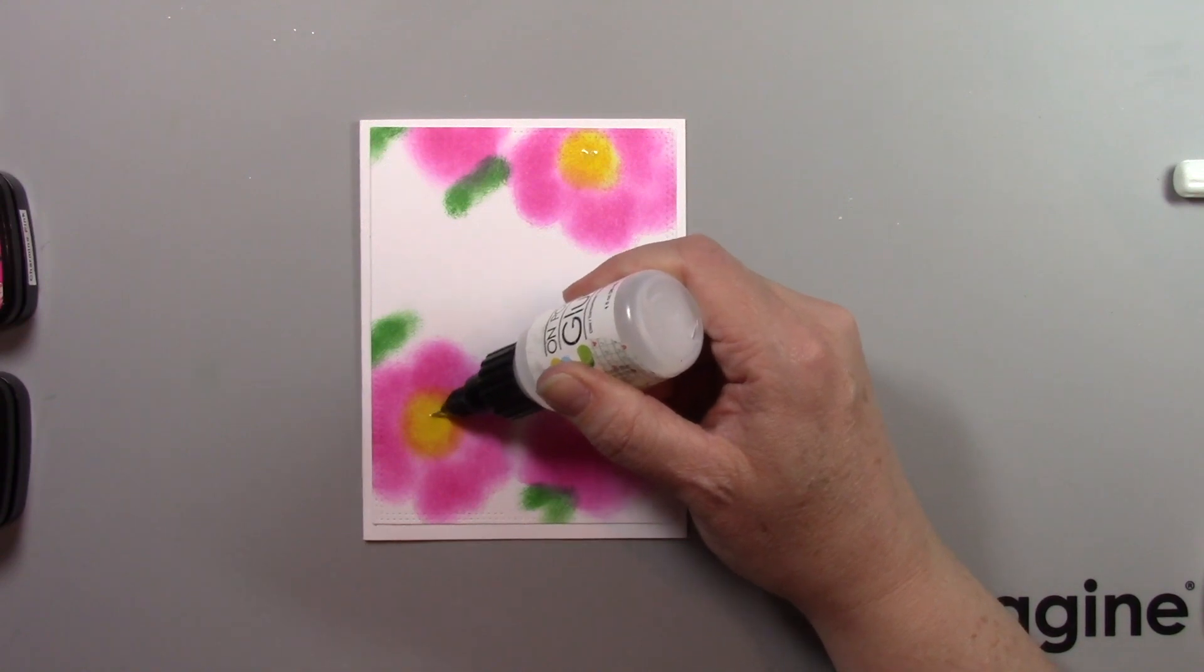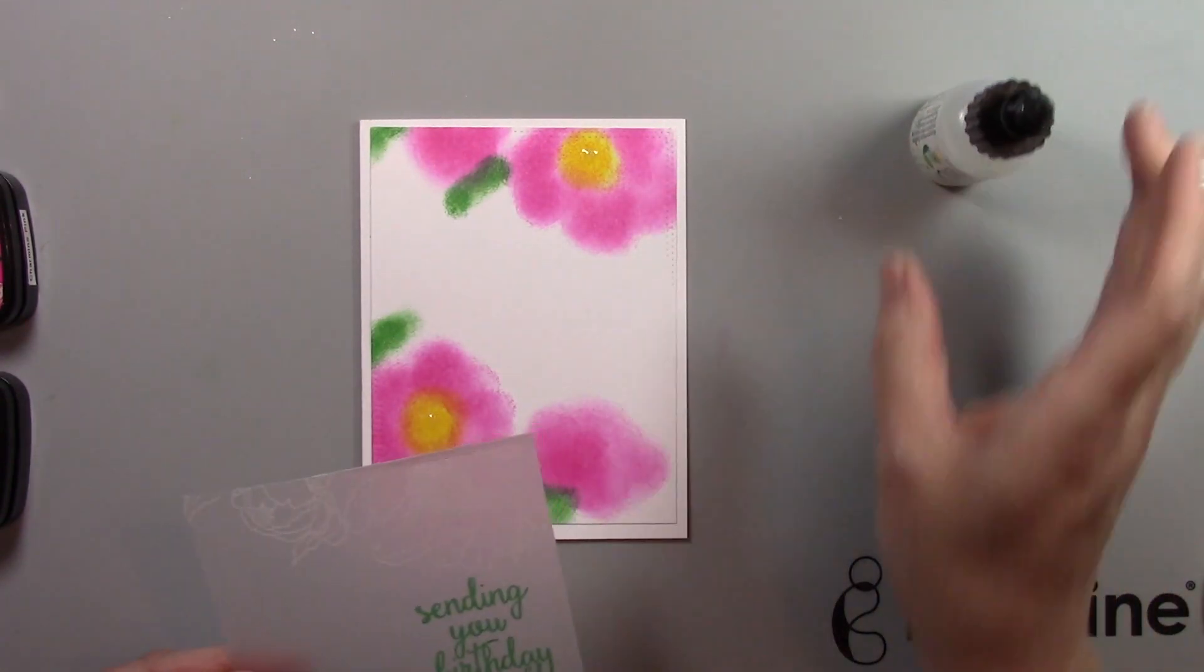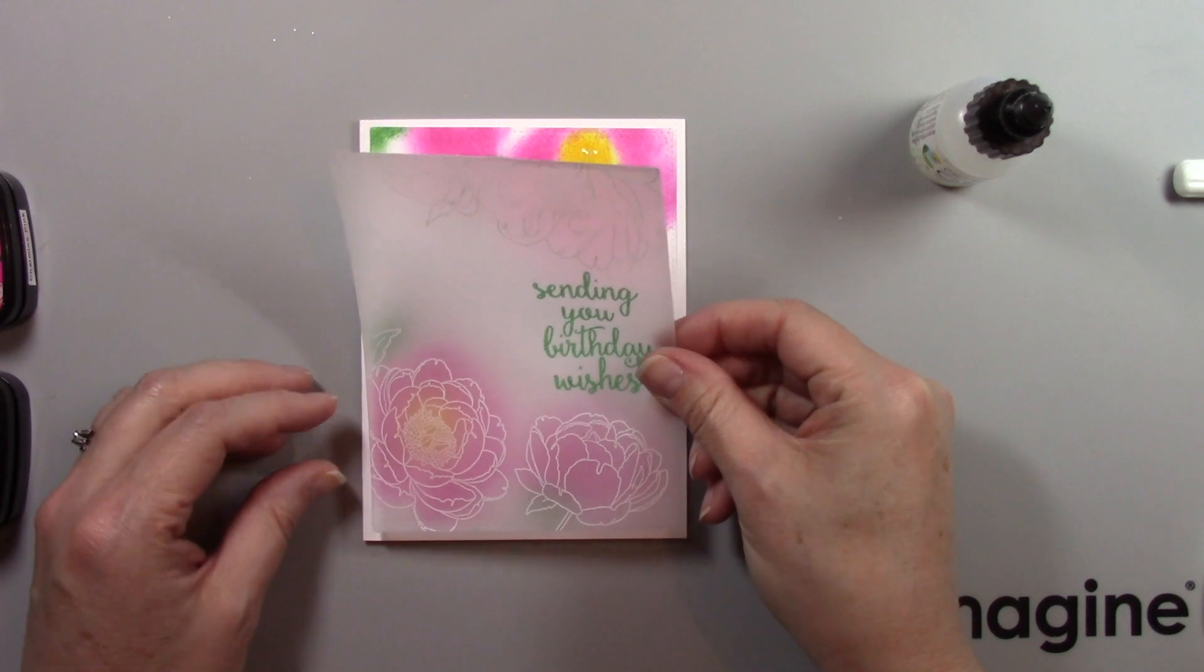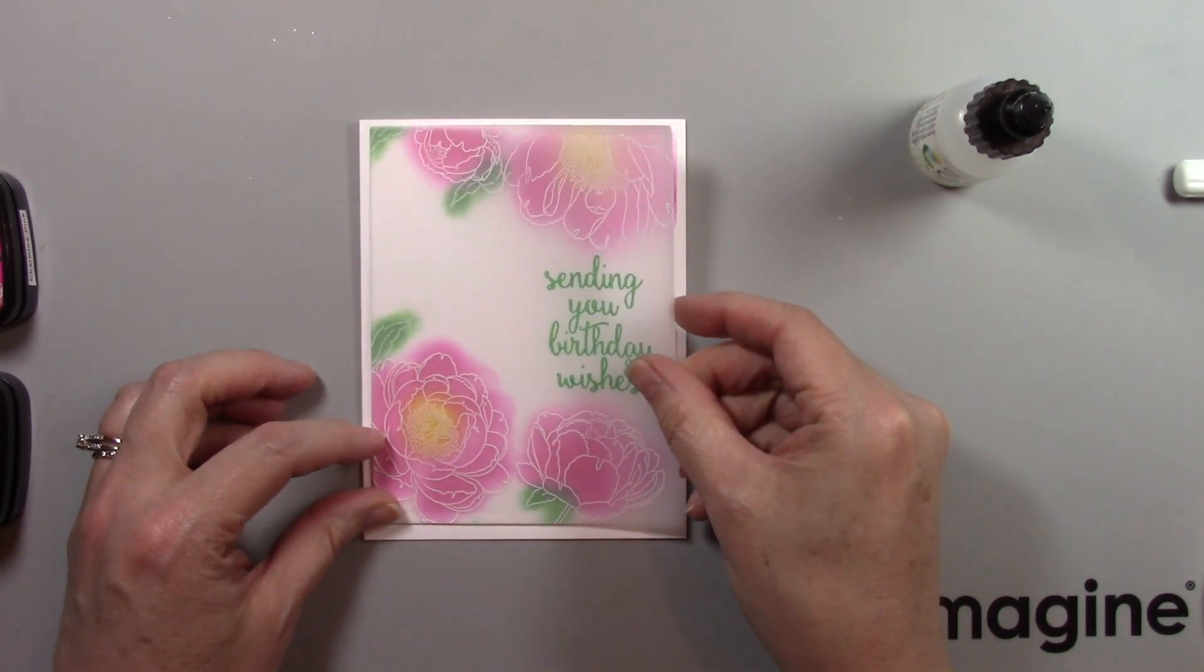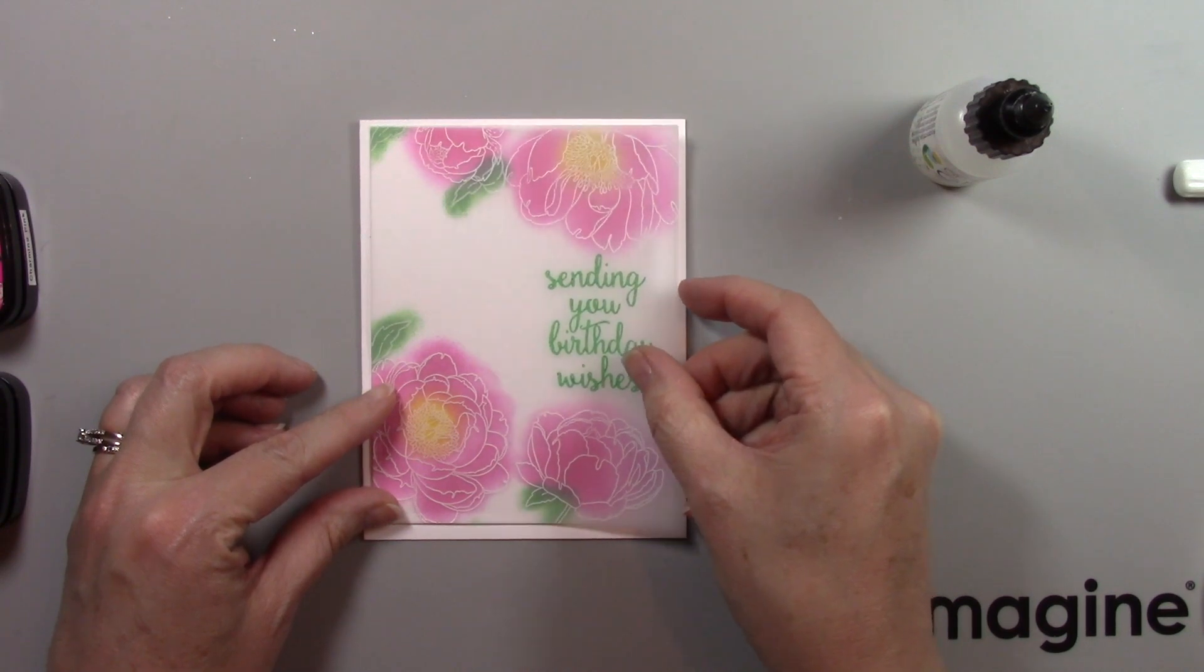Now I'm taking my On Point glue, my favorite glue for using with vellum as it dries very clear. I'm adding it to the center of those peonies and then adhering my vellum to that.